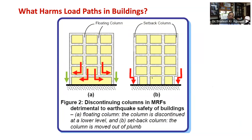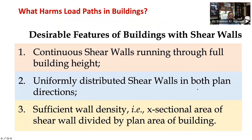Presence of setback columns leads to poor building performance in an earthquake. Also, brittle damage is expected in beam-column joints and beams adjoining the setback locations. Now let's understand buildings with structural walls.